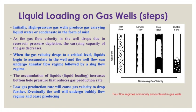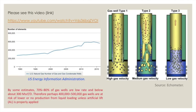Low gas production rate causes gas velocity to drop further, eventually driving the well into bubbly flow regime and then ceasing production. It is always important to find out the minimum flow rate at which the well should be produced so that liquid loading does not occur.